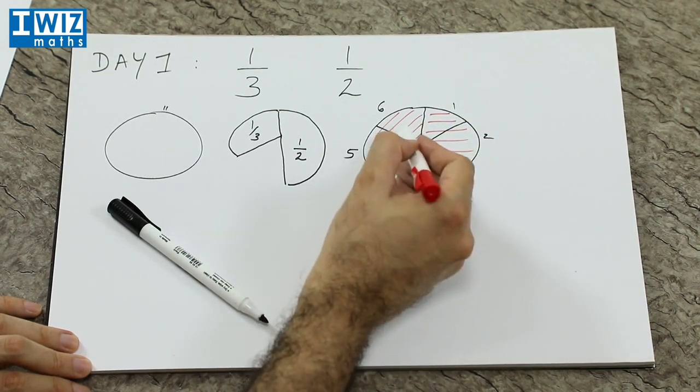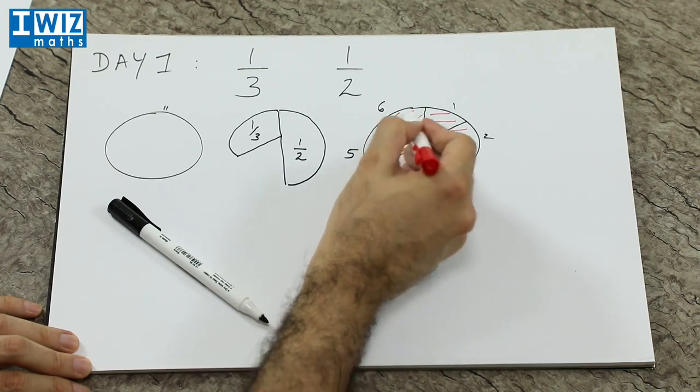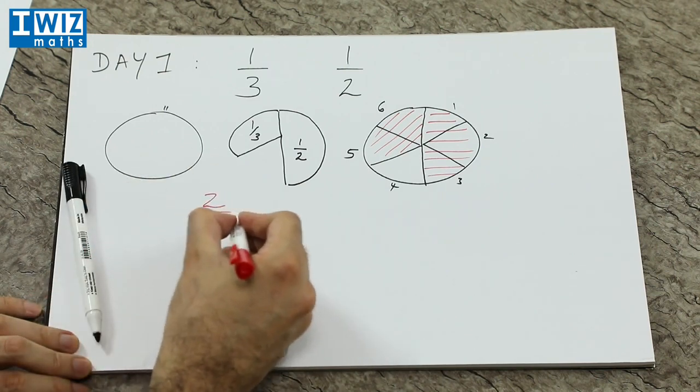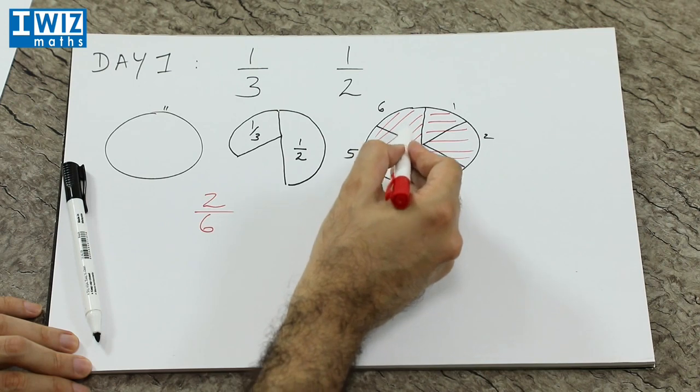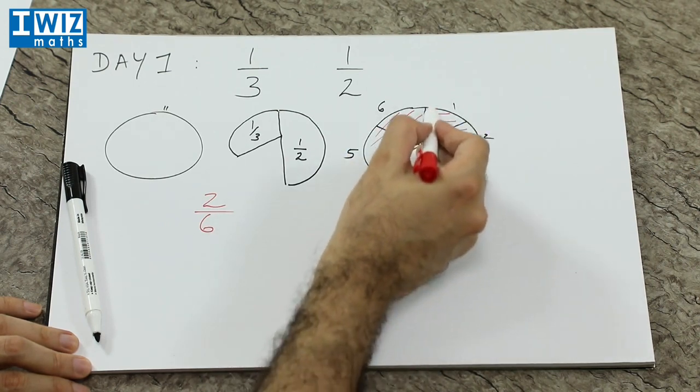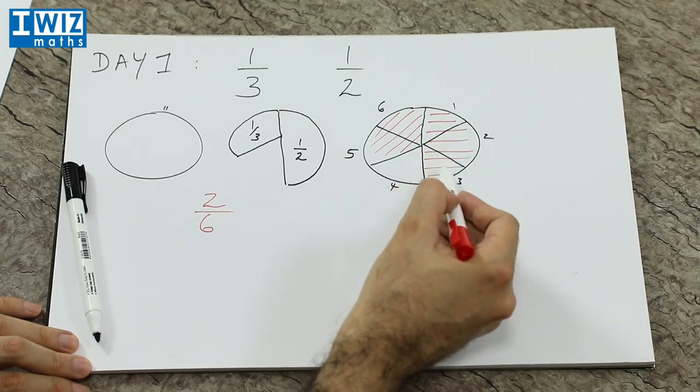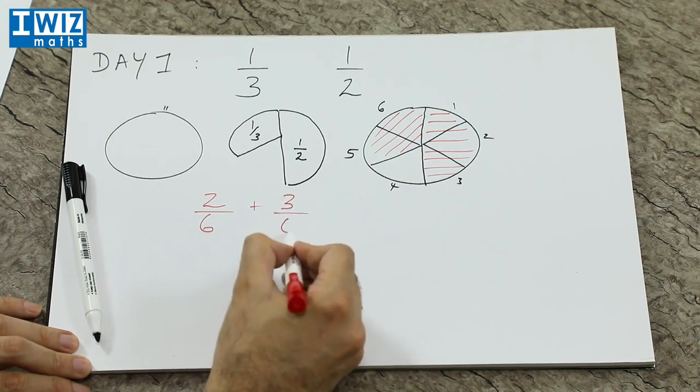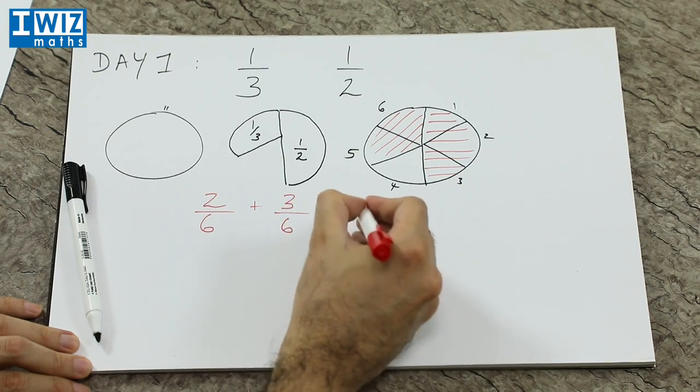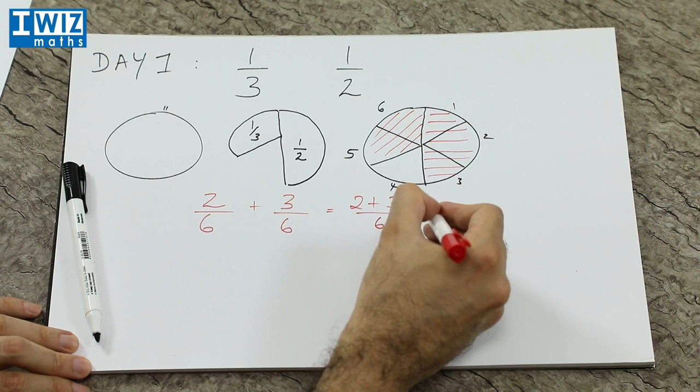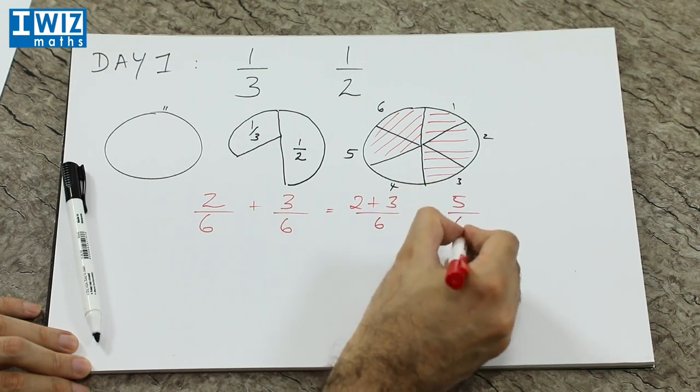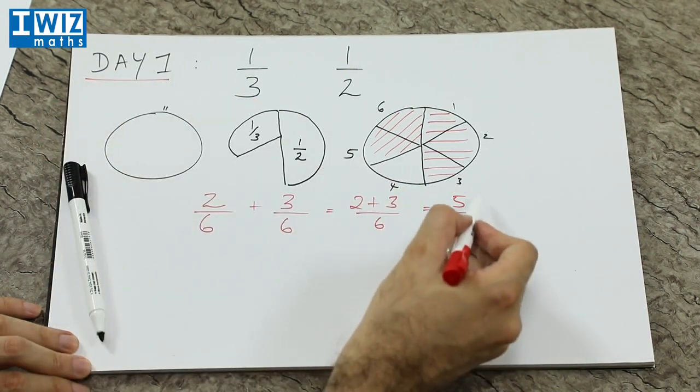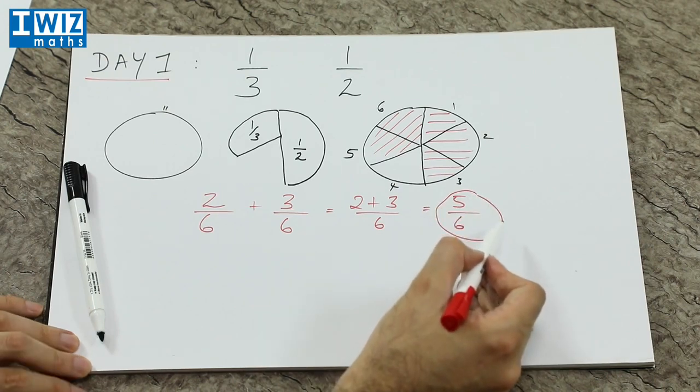Essentially what I've done is, one-third is two of the total six pieces, so I write down two divided by six. And this shaded region here is essentially three of the total six pieces, so that is three divided by six. That is just two plus three divided by six, which is five divided by six. So essentially what happens here is that on day one I have eaten five-sixths of the whole apple.